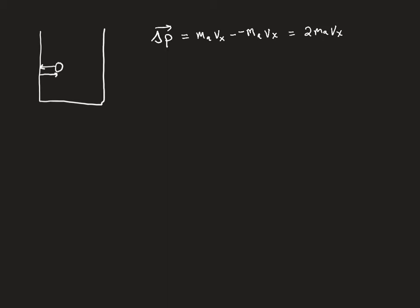The other half of the impulse-momentum theorem is F_net times time, which equals the change in momentum. Now we're trying to get the temperature, and to get the temperature we need to go through pressure via the ideal gas law. So we use the relationship that pressure equals force divided by area, turning this into pressure times area equals force, and we substitute in pressure times area.